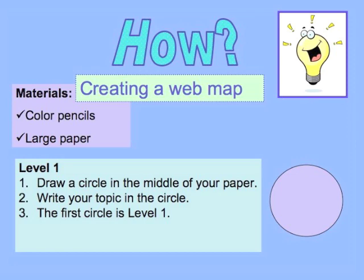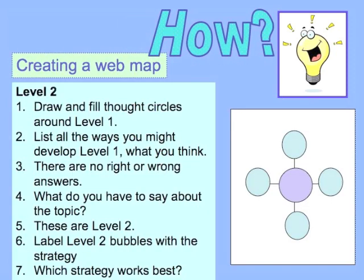So let's begin. You will need colored pencils and a large piece of blank paper. In the middle of your paper, draw a circle. Write your topic in the circle. The first circle is level one.